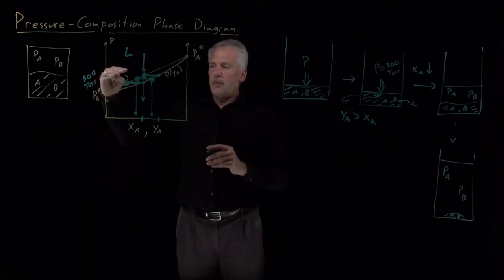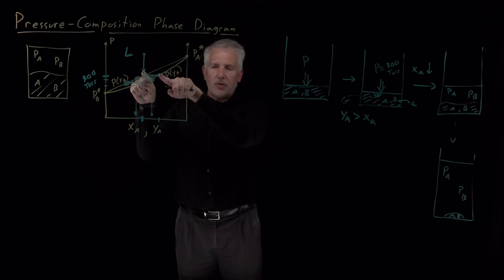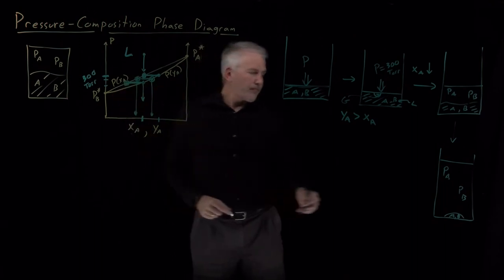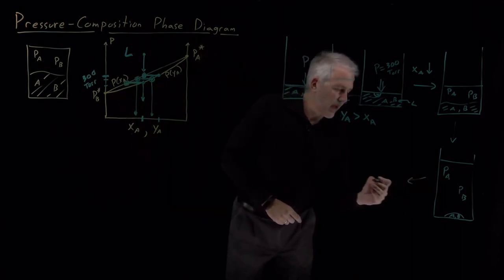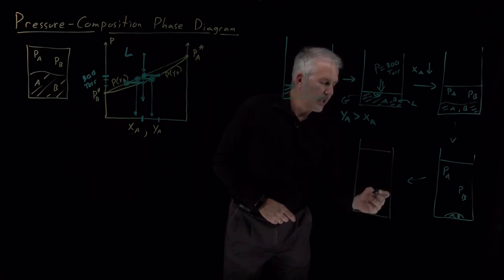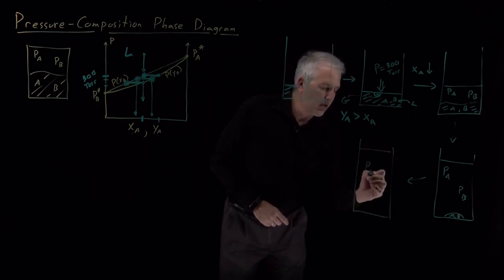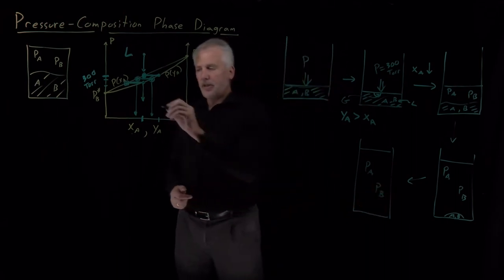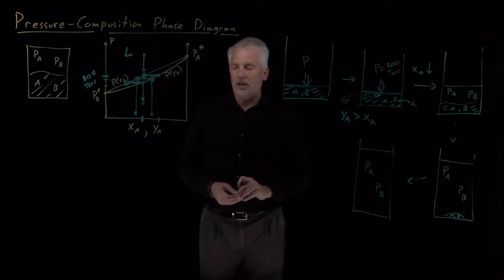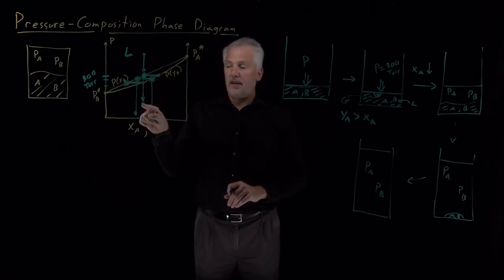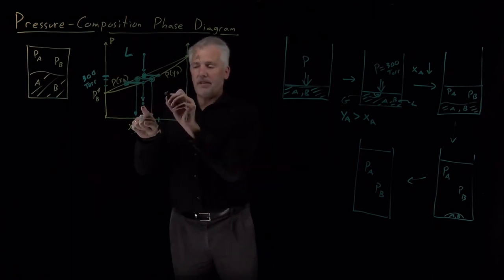As I drop the pressure, I've moved from liquid and vapor compositions equal to these initial values, and they've slid down these coexistence curves. As a last step, if I evaporate the last bit of liquid and reduce the pressure even further, I've got purely A and B in the gas phase — none left in the liquid phase. If I'm at a pressure below this lower curve, I'm no longer in coexistence; I have only one phase, and that phase is the gas phase.